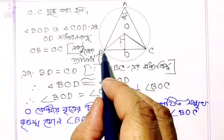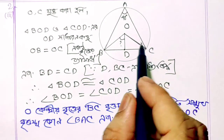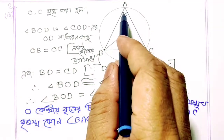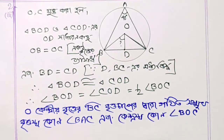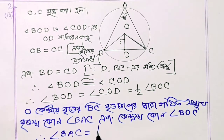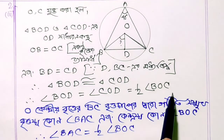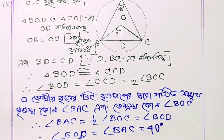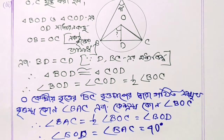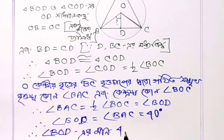We know that the central angle subtended by an arc is double the inscribed angle subtended by the same arc. So angle BAC equals half of angle BOC. Half of BOC equals BOD. And if BOD equals BAC equals 40 degrees, then BOC equals 40 degrees.